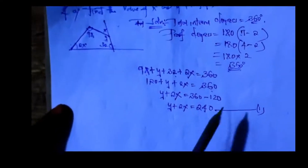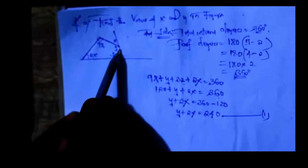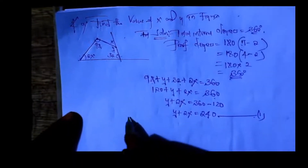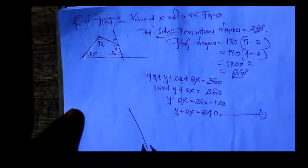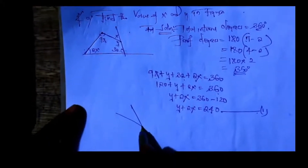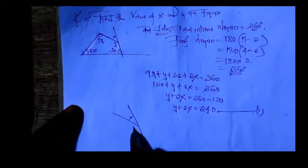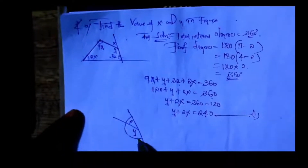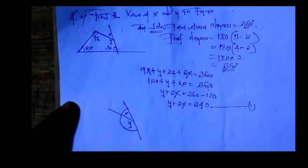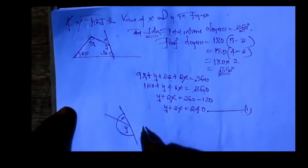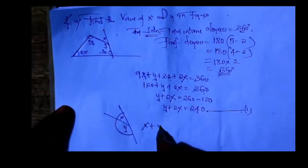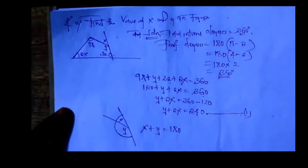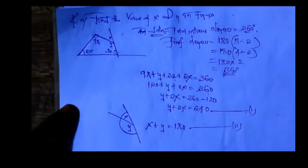Now this is equation number 1. Looking at another part of the figure here: X and Y are on a straight line, so the total is 180 degrees. That means X plus Y equals 180. This is equation number 2.